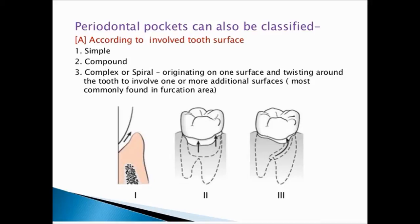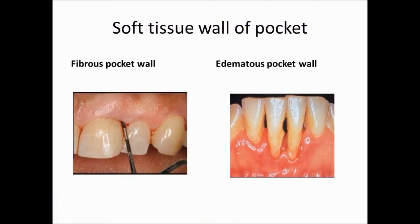The periodontal pocket can also be classified according to the surfaces of the tooth involved. In a simple pocket, only one surface is involved. In a compound pocket, two surfaces are involved, while in a complex pocket more than two surfaces are involved. Pockets can also be classified according to the nature of the soft wall: it could be a fibrotic pocket wall or an edematous one.